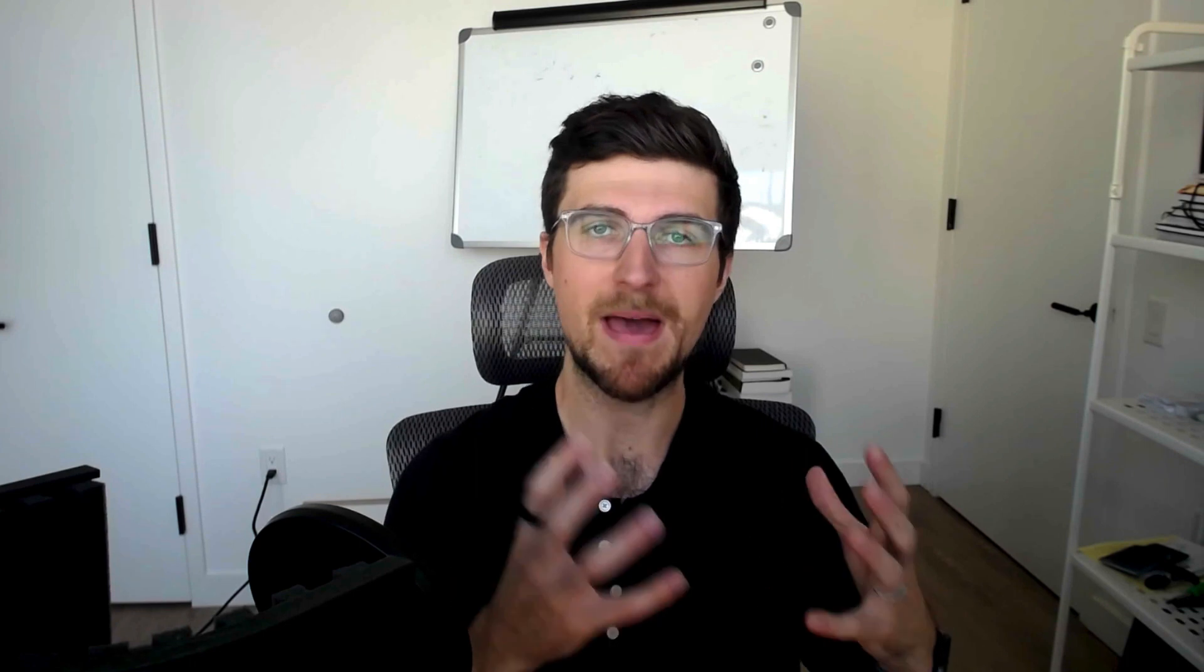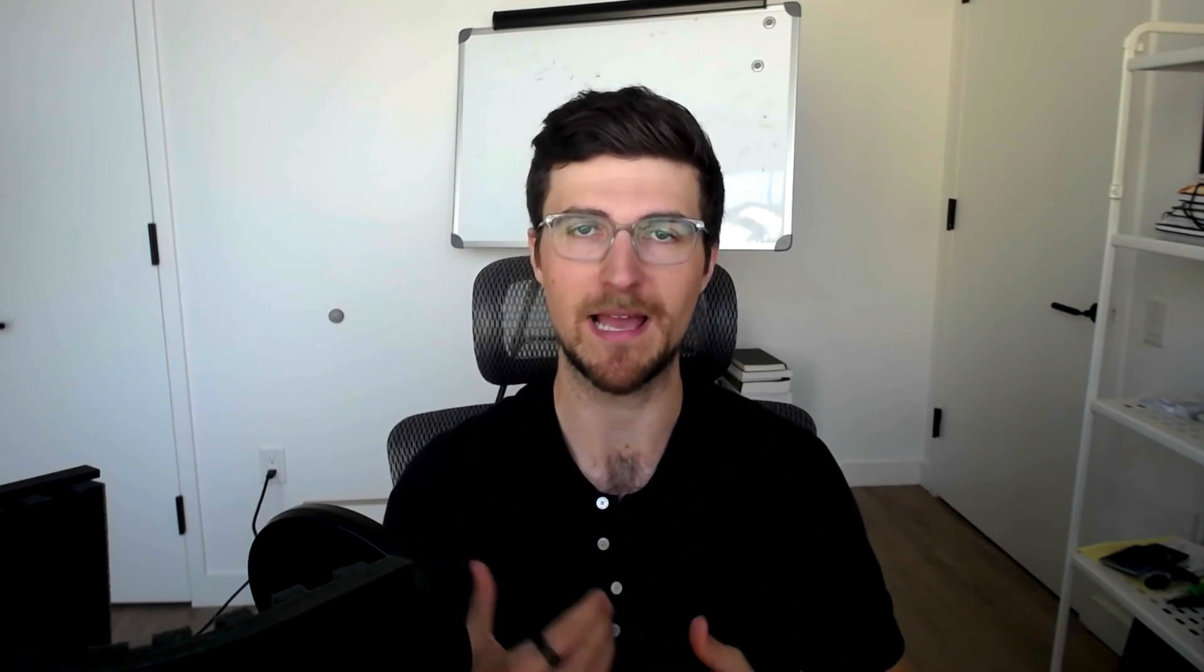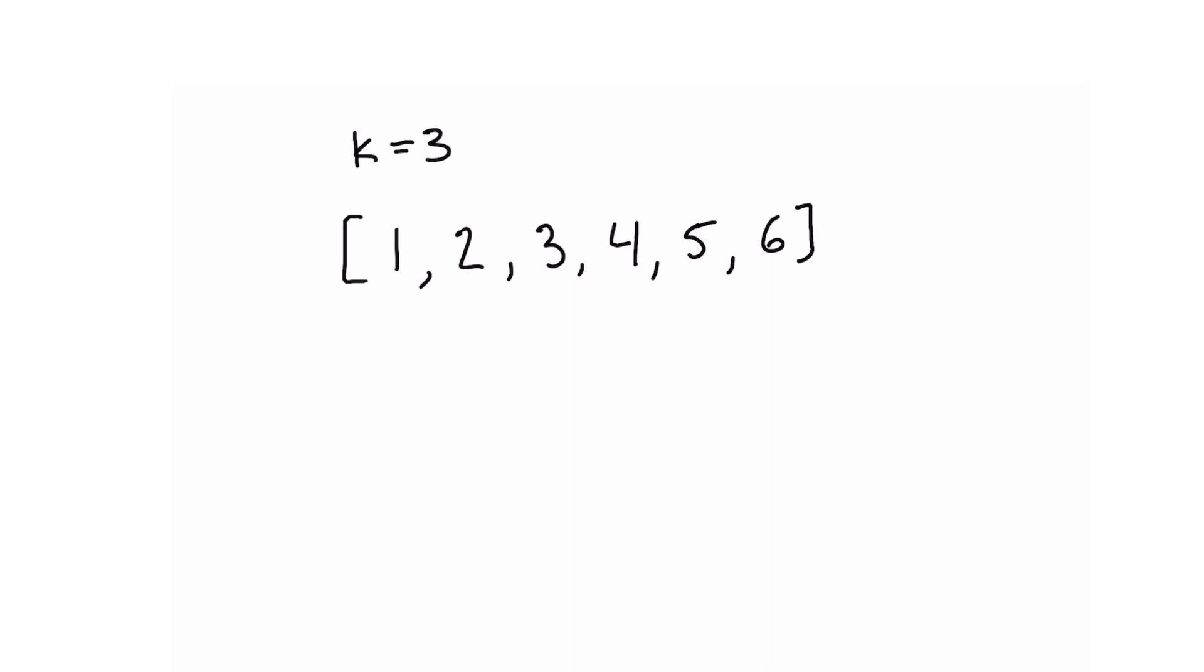So how do we apply this concept back to that original question where we want to find the sum of each subarray of length k? Well first we're going to sum up that initial subarray and we're going to get this value of 6 which we add to our result. Now we slide our window by 1 and we compute this value in constant time by subtracting 1 and adding 4 and getting 9. We repeat this process again and we end up with 12 as our next value by removing the 2 and adding 5. And finally for our last window we slide one more time, we remove the 3 and we add 6 and we get 15.